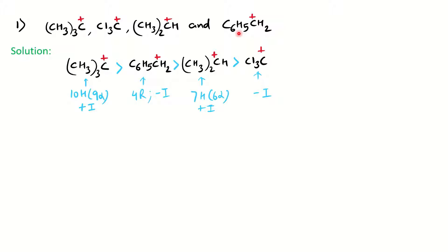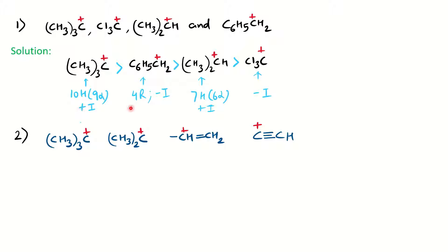Comparing overall stability: tertiary butyl has ten hyperconjugation structures (nine alpha hydrogens) and a plus-I effect. The benzylic carbocation has four resonating structures but a slight minus-I effect - however, resonance dominates, not the minus-I effect. The secondary carbocation has seven hyperconjugative structures (six alpha hydrogens) plus inductive effect, where hyperconjugation overpowers. The chlorine-substituted one is least stable because chlorine, being electronegative, withdraws electrons from the already electron-deficient carbon, destabilizing it further.